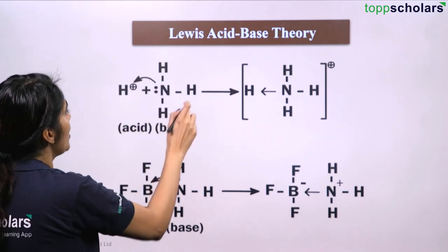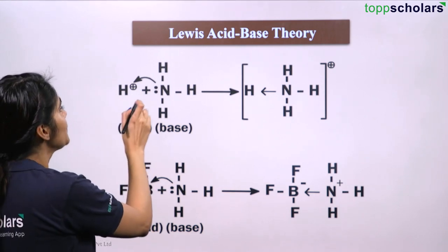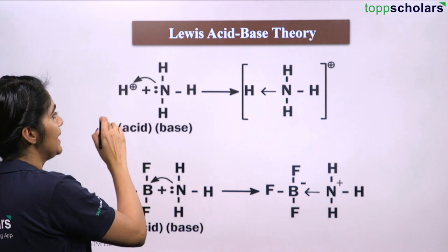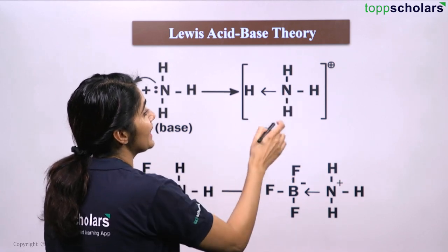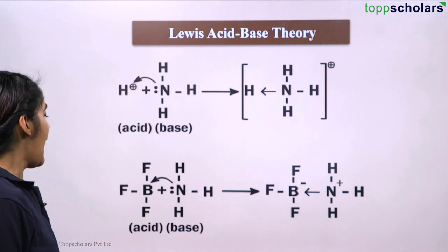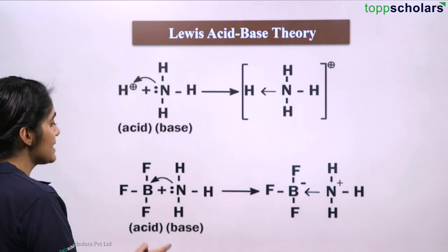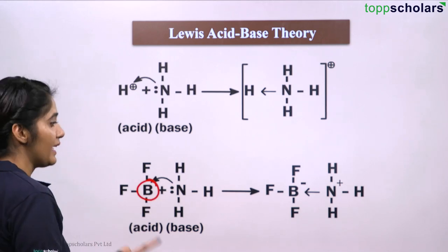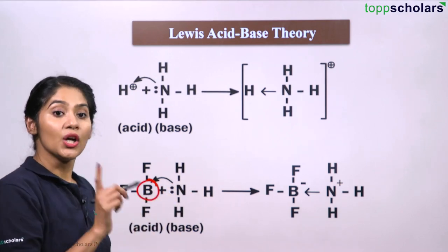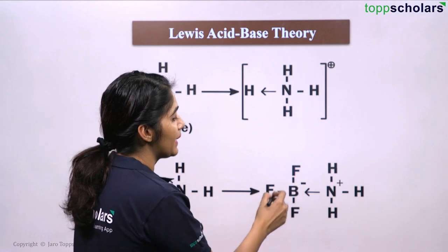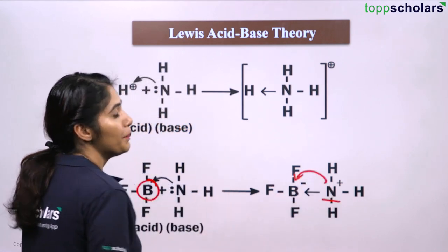As you can see, NH3 has N with a lone pair of electrons. It transfers these electrons to H+ in water, becoming NH4+ and gaining a positive charge. In the BF3 example, because B was short of electrons in its outer orbit, it gains electrons from NH3's lone pair — becoming negatively charged, while N becomes positively charged since it donated its electrons to B.